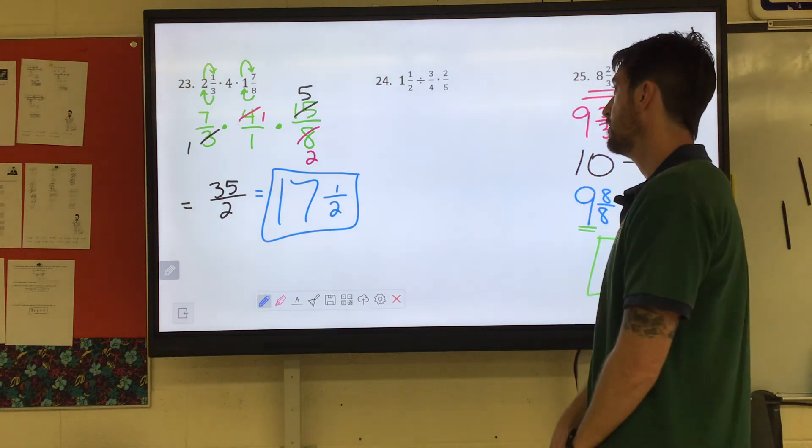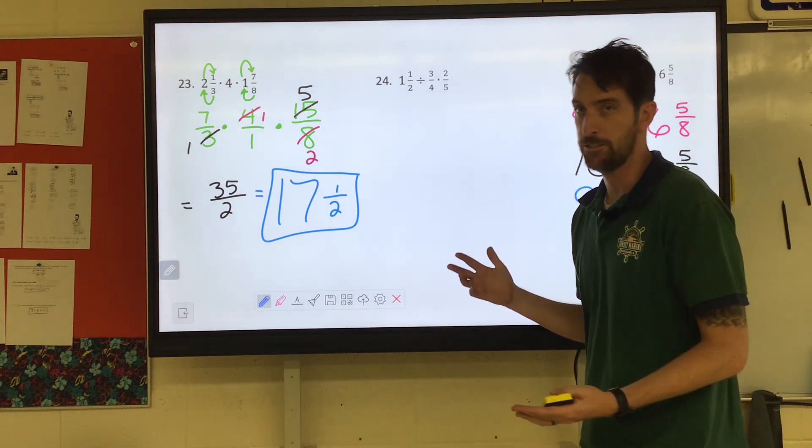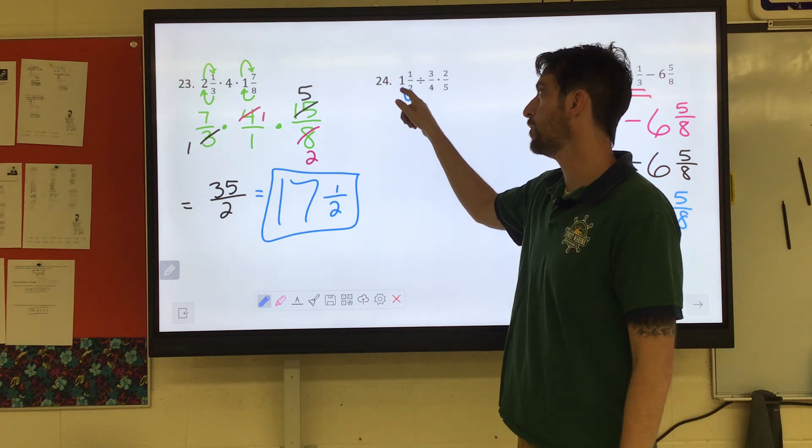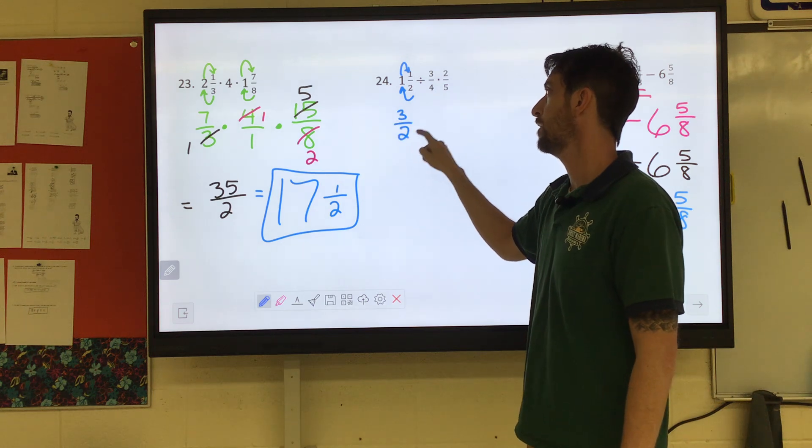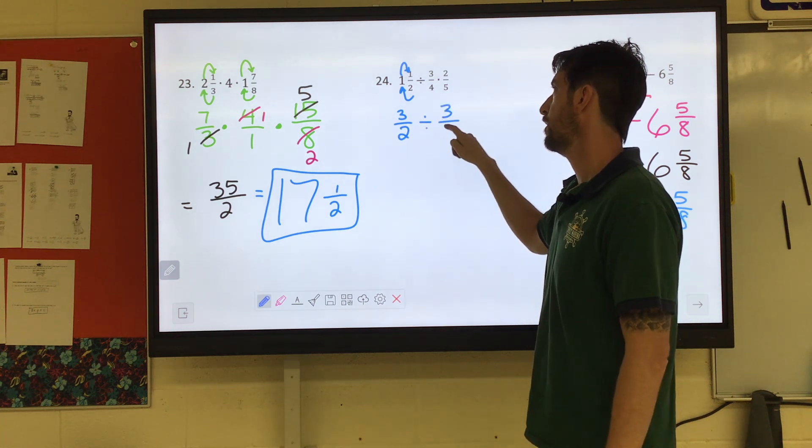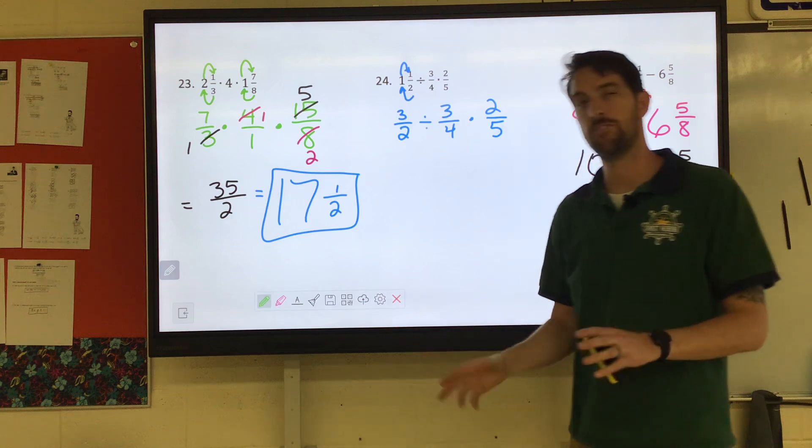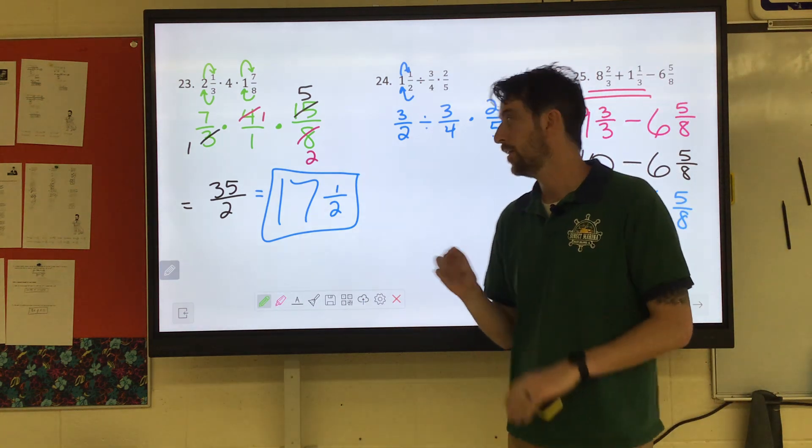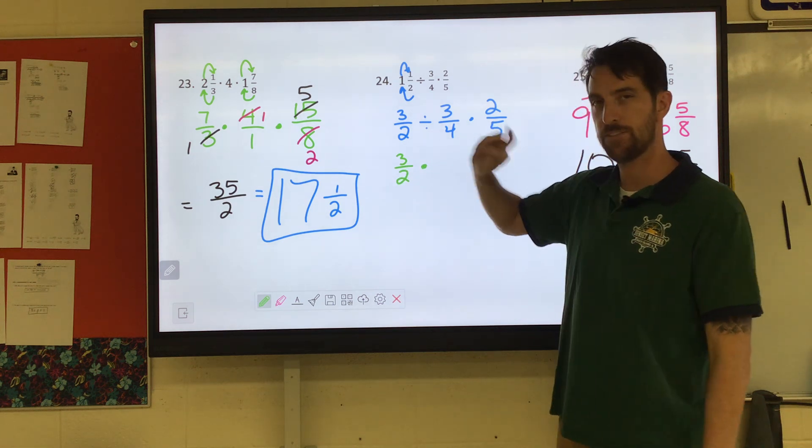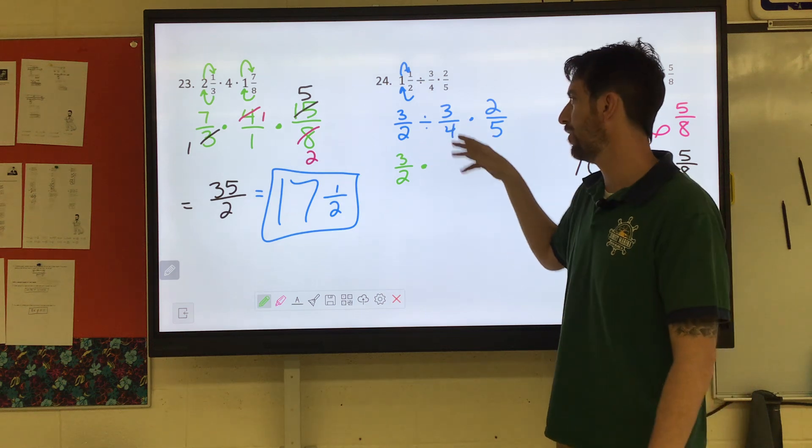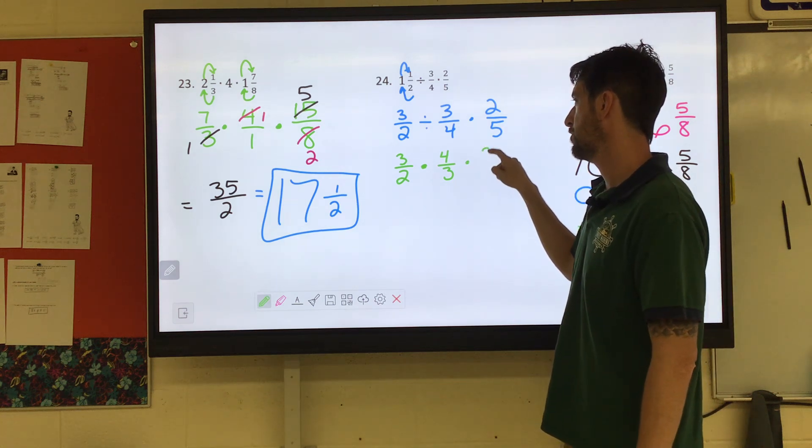And number twenty-four. We've got division. We've got multiplication. Regardless, we're going to need them as improper fractions. So I start in the denominator. Two times one is two plus one is three. So we have three over two divided by three over four times two over five. Now remember when you have division of fractions. It's the old keep, change, flip. So we're going to keep the first fraction, three over two. We're going to change the division to multiplication. We flip the second fraction. Just the fraction right after the division. Four over three. You make it the reciprocal. And then we still have the times two over five.